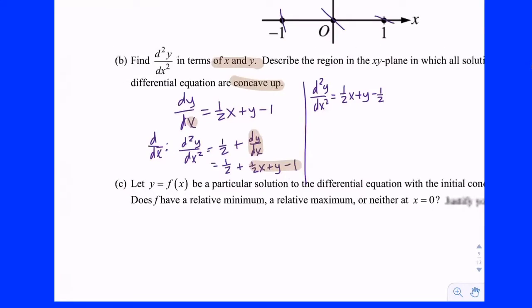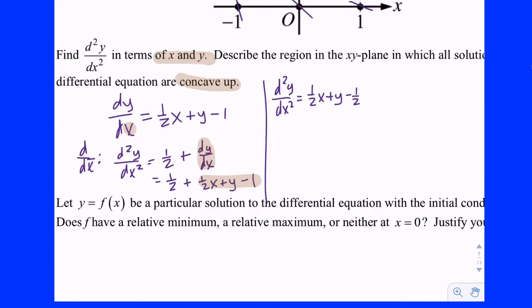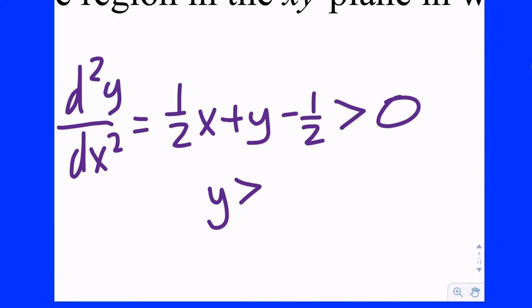Now describe the region in the xy-plane where solution curves are concave up. Any solution is concave up when its second derivative is positive — greater than zero. To describe the region we solve for y, since we can interpret y equals something as a graph and use the inequality to say above or below the graph. Bringing negative one-half x across: y must be greater than negative one-half x plus one-half.